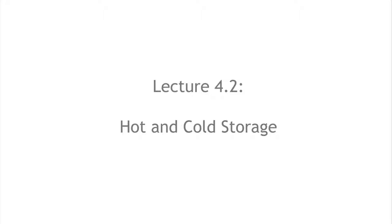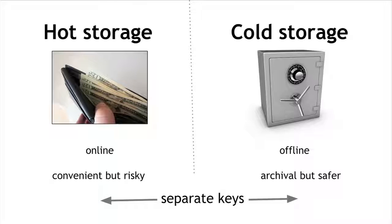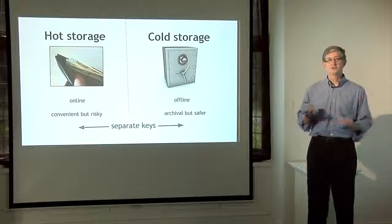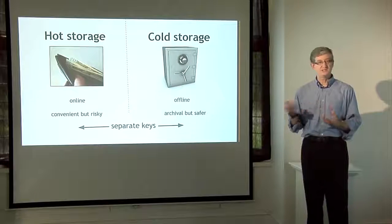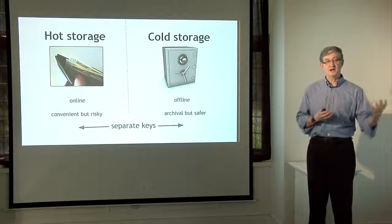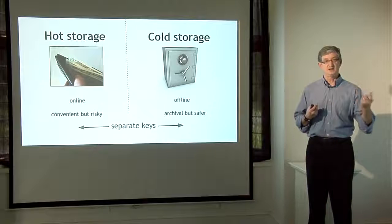In segment 4.2, we'll talk about hot storage and cold storage. Recall from 4.1 we talked about storing Bitcoins on your local computer — the equivalent of carrying money in your wallet. The idea of hot and cold storage is that you'll have some hot or online storage on your phone or local computer, which is convenient but risky. You keep some money in hot storage and some in cold storage. Cold storage is offline, locked away, not connected to the internet — more secure but not as convenient.